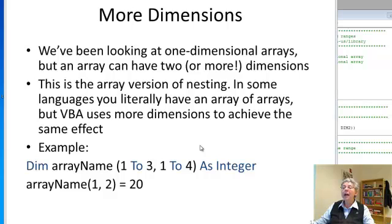Now you can have more than one dimension. This is the array version of nesting and in some languages you actually have an array of arrays. In Visual Basic you have a different way of doing it. It's a two-dimensional array and here's an example. So array 1 to 3, 1 to 4 as integer sets up an array with 3 rows and 4 columns, 12 items total.